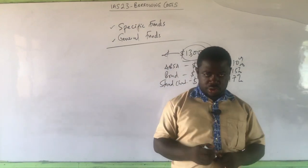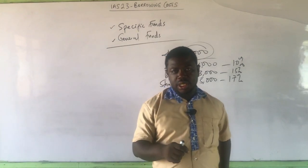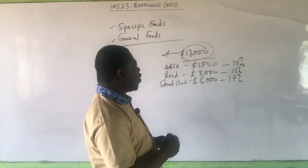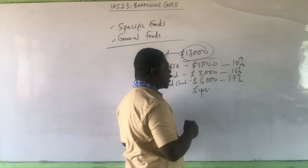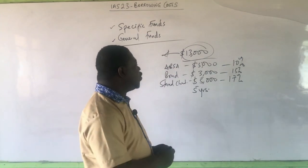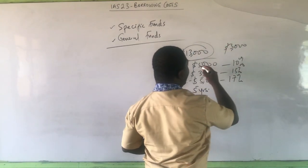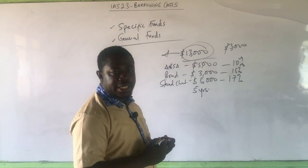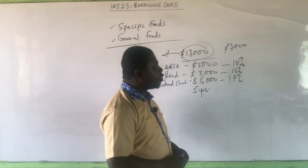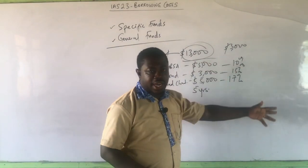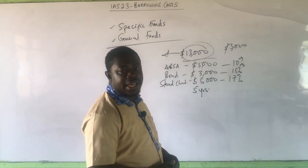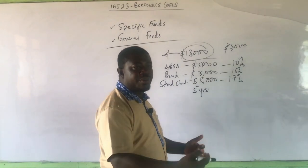One more important thing: after finding the borrowing costs, assume we went specifically for this amount of money, but the construction of the qualifying asset will take five years to complete using the $13,000. In the first two years, we realize we only need $3,000 to complete construction, and the extra $10,000 will come in during subsequent years. Instead of allowing cash to lie idle, we decided to invest the idle cash of $10,000 — we can invest idle cash out of the money secured for constructing the qualifying asset.